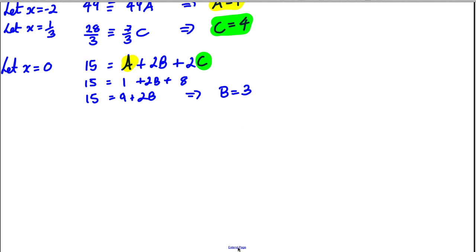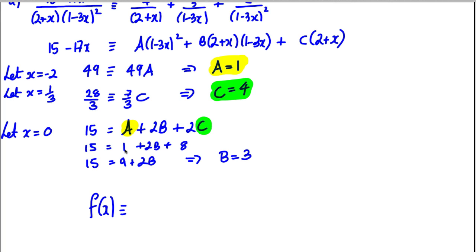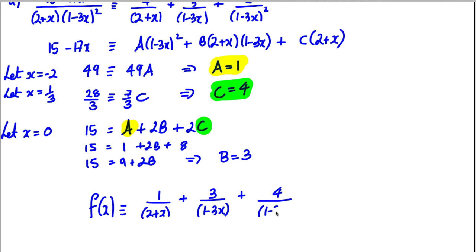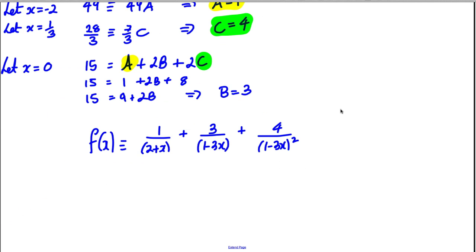Writing the final answer for Part A: f(x) is identical to 1/(2 + x) + 3/(1 − 3x) + 4/(1 − 3x)². That completes the first part — finding the values of A, B, and C.